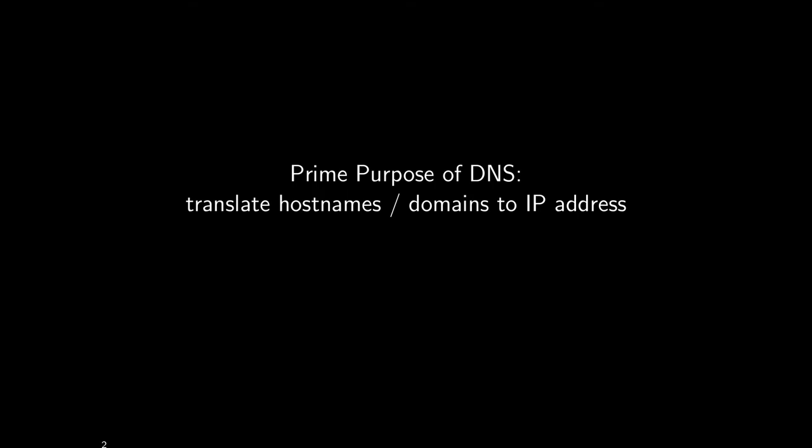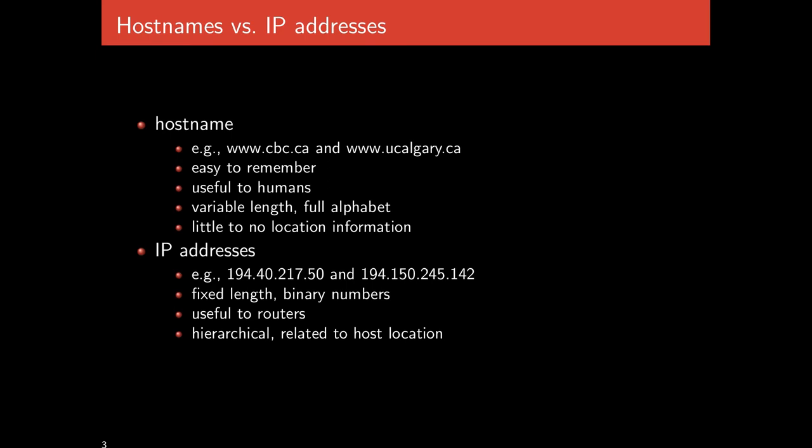For instance, the IP of ucalgary.ca is 136.159.96.125. That latter form is not very easy to remember, and it's certainly not meaningful to a human. Hostnames like ucalgary.ca or cbc.ca are easy to remember and useful for humans.